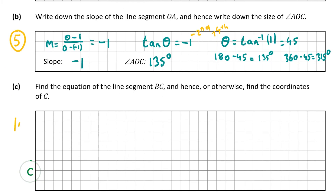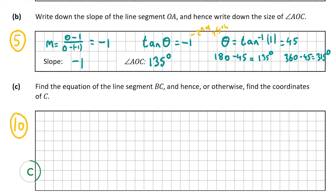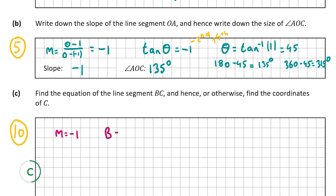Part C is worth 10 marks. We have to find the equation of line segment BC and hence find the coordinates of point C. The equation of a line formula on page 18 is: y minus y1 equals m times (x minus x1), where (x1, y1) is a coordinate on the line and m is the slope. Since BC is parallel to OA, the slope m equals minus 1, and point B (4, 6) lies on the line.